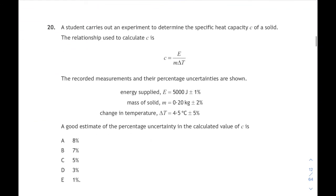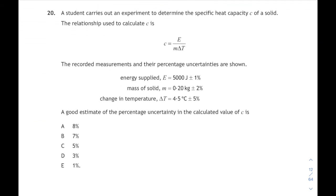Last question. Question 20: a student carries out an experiment to determine the specific heat capacity of a solid. There's the relationship for it, it's a national five relationship. We're told what the heat energy supplied is with its uncertainty, the mass of the solid, and the change in temperature. This looks as if we're going to have to calculate c, but we don't. We only have to look at the percentage uncertainties in each of those measurements because the question is asking us a good estimate of the percentage uncertainty in the calculated value of c. Well at higher physics all you have to do is look at your percentage uncertainties and you pick the biggest one. It's the biggest of the three there: one percent, two percent, and five percent. Five percent is the biggest, so the uncertainty in our calculated value of c will also be five percent.